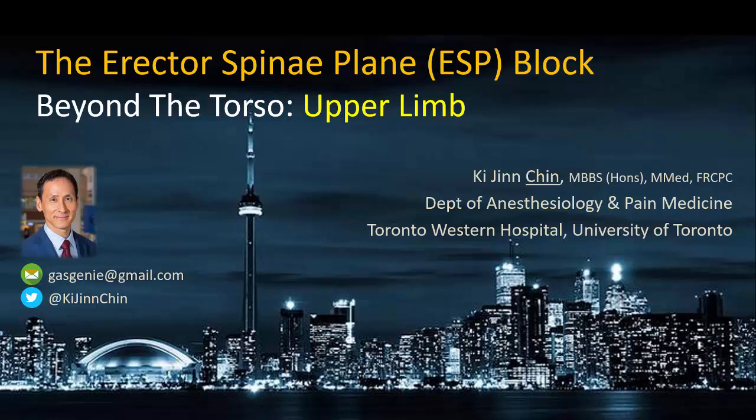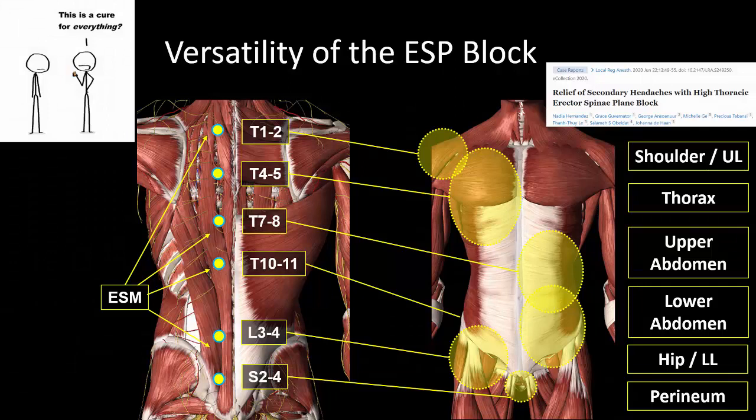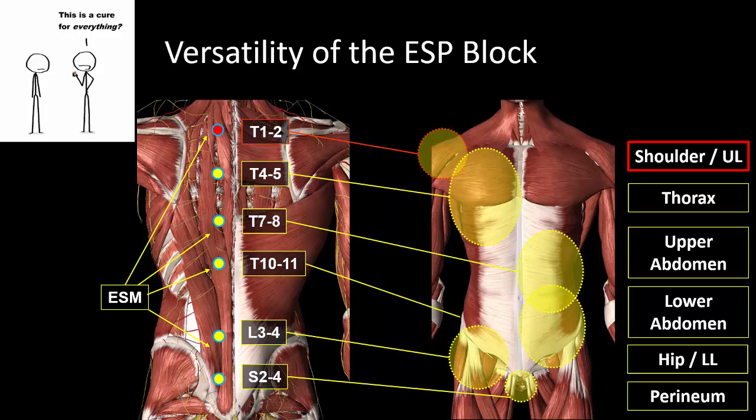This presentation is extracted from a talk given at the Hospital for Special Surgery in October 2021, discussing applications of the ESP block beyond the torso. The ESP block was first described for thoracic analgesia, and although its main applications still center on thoracic and abdominal analgesia, it has been described for applications literally from head to toe, based on the erector spinae plane that runs the length of the spine. In this video, we'll be focusing on analgesia of the upper limb.